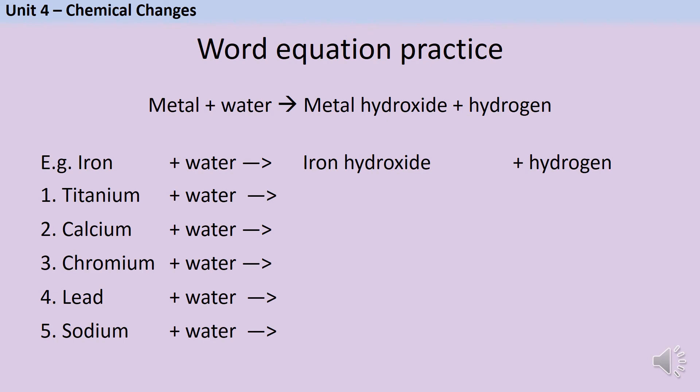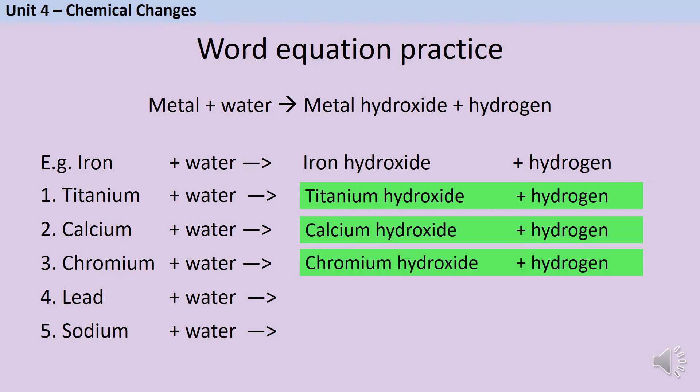Iron reacts with water to make iron hydroxide plus hydrogen. Pause the video and complete the other five word equations. Hopefully, you've managed to work out that titanium plus water reacts to make titanium hydroxide plus hydrogen. Calcium reacts with water to make calcium hydroxide plus hydrogen. Chromium reacts with water to make chromium hydroxide plus hydrogen. Lead reacts with water to make lead hydroxide plus hydrogen. And sodium reacts with water to make sodium hydroxide plus hydrogen. It always follows the exact same pattern.